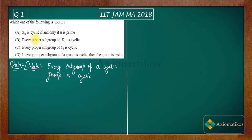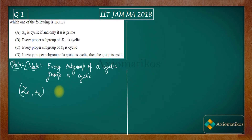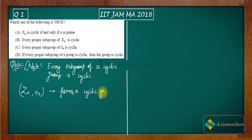Option B says every proper subgroup of Zn is cyclic. What do we know? Zn with addition modulo n forms a cyclic group for all n.